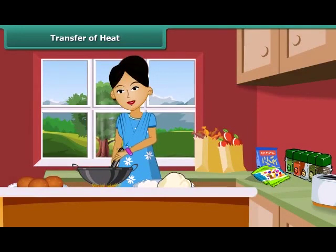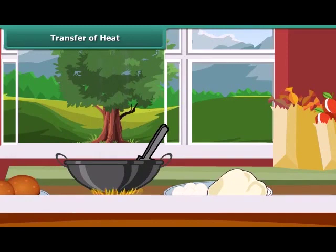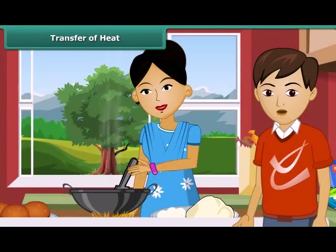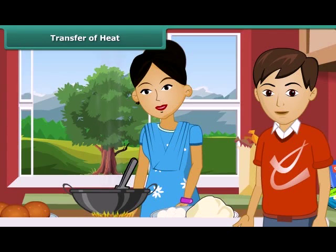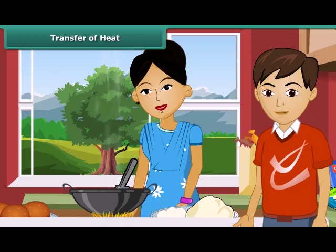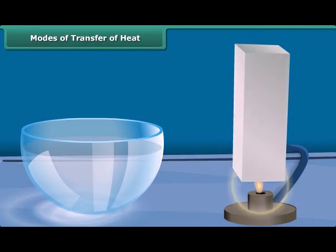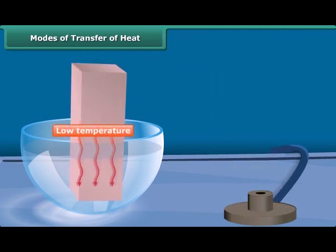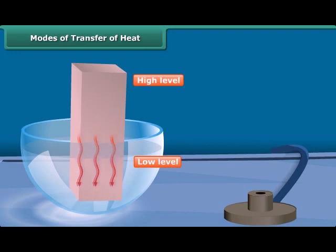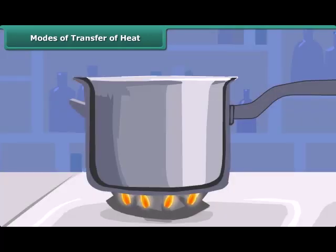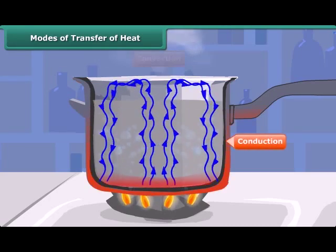When a stove is lighted in the kitchen, the air inside the room becomes a little warmer. If this air is allowed to come out through an open window, it gradually cools down. The metal stirrer left in the cooking bowl becomes hot. These examples indicate that bodies at higher temperature lose heat and their temperature falls, while bodies that gain heat see their temperature rise. There is a mutual exchange of heat between bodies at different temperatures. Heat flows from bodies at higher temperature to bodies at lower temperature, just as water flows from a higher to a lower level. There are three modes of transfer of heat: conduction, convection and radiation.